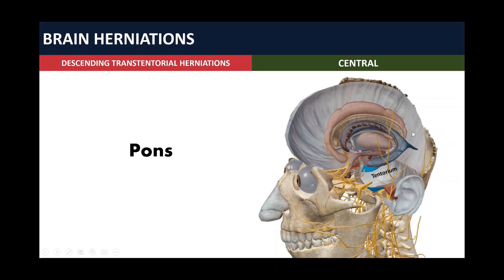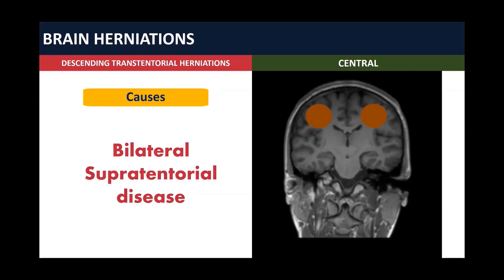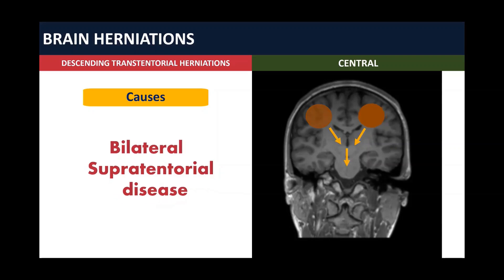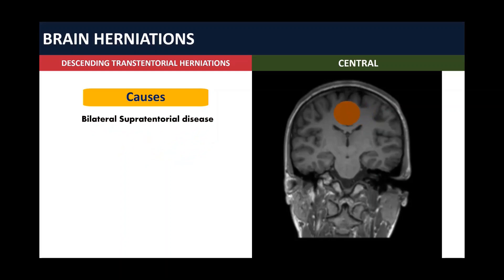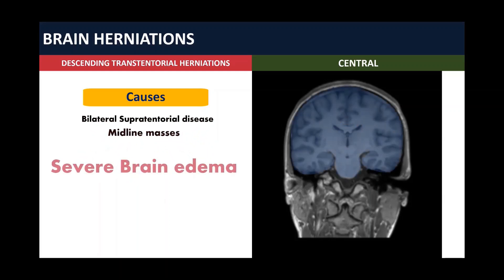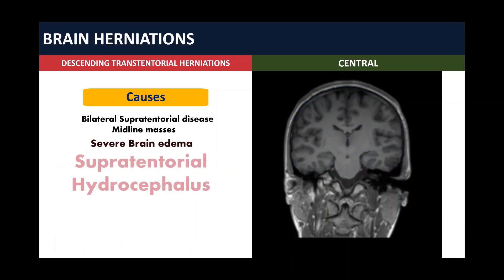The midbrain goes all the way down, and the superior part of the pons — which is supratentorial — goes all the way down as well. The causes of central descending trans-tentorial herniations include: bilateral supratentorial disease creating a downward vector, midline masses, severe brain edema, and supratentorial hydrocephalus.